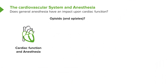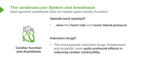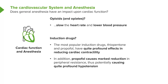Opiates and opioids have little direct effect upon the heart other than slowing heart rate, which in most cases is a very positive situation. They also have a moderate effect on lowering blood pressure, with very few side effects. Induction drugs, unfortunately, are much more problematic. The most popular induction drugs are thiopental and propofol. Both have profound effects on reducing cardiac contractility, and propofol causes marked reduction in peripheral resistance, potentiating hypotension and sometimes leading to reduced blood flow to vital organs, including the heart.